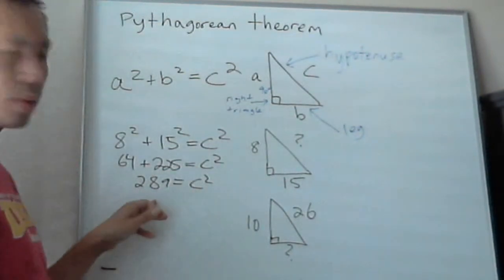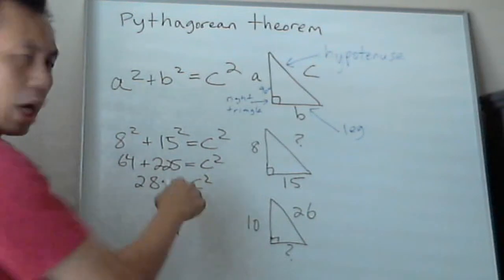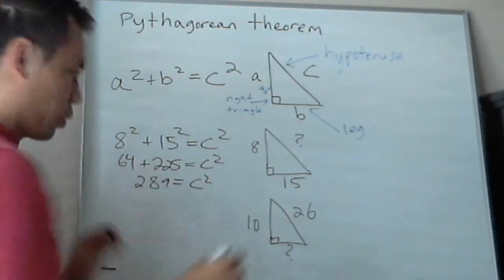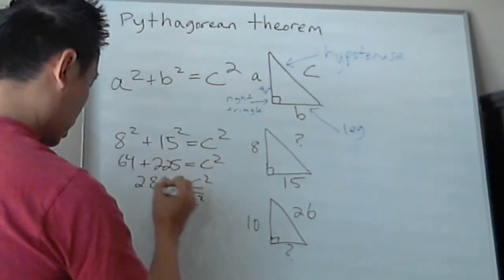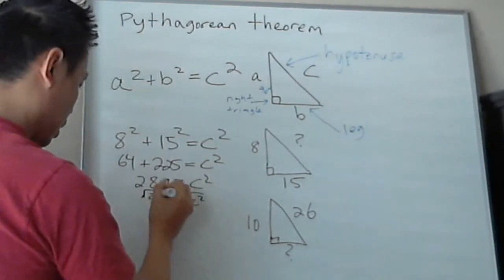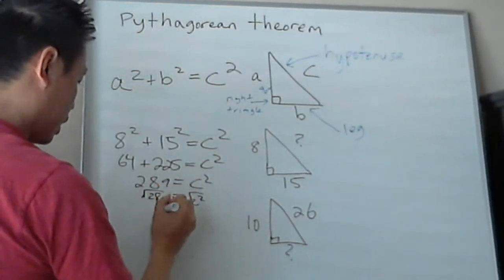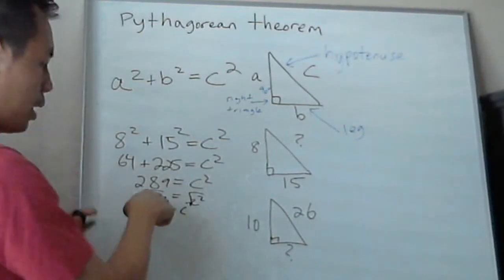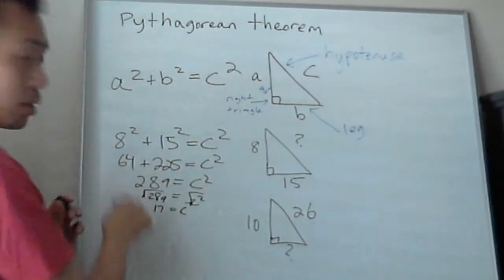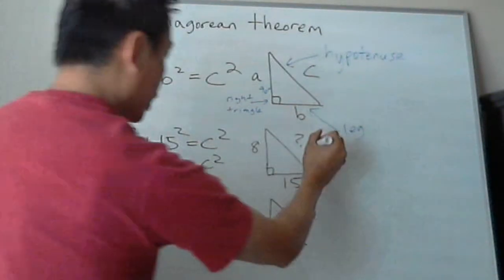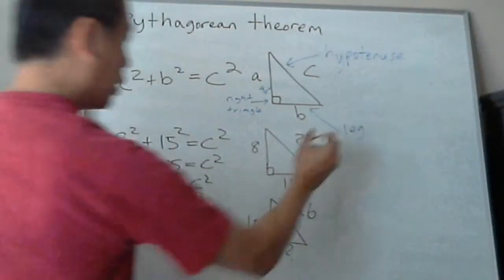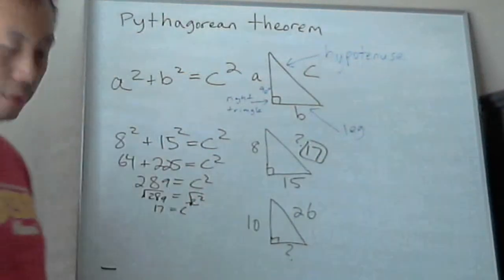And then how do you solve that? C squared equals 289. What do you do? Well, the opposite of square is square root. So you take the square root of that, and you will get 17. The square root of 289 is 17. 17 times 17 is 289. So that's how you do this problem. So the answer is 17 for hypotenuse.